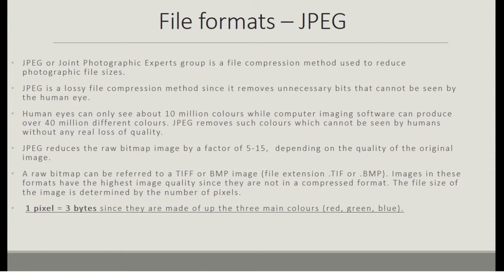JPEG, or Joint Photographic Experts Group, is a file compression method used to reduce photographic file sizes. JPEG is a lossy file compression method, since it removes unnecessary bits that cannot be seen by the human eye. The human eye can only see about 10 million colors, while computer imaging software can produce over 40 million different colors. JPEG removes colors which cannot be seen by humans without any real loss of quality, and reduces the raw bitmap image by a factor of 5 to 15, depending on the quality of the original image.